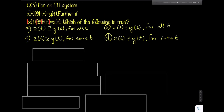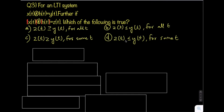Let us solve the next question from signals. For an LTI system, x(t) convolved with h(t) is given as y(t). Further, |x(t)| convolved with |h(t)| is given as z(t). Which of the following is true? Options: z(t) ≥ y(t) for all t; z(t) ≤ y(t) for all t; z(t) ≥ y(t) for some values of t; or z(t) can be greater than, less than, or equal to y(t) for some values of t.